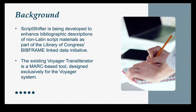Let's take a moment to understand the need for a tool like ScriptShifter. As the Library of Congress transitions to a linked data environment and implements the library collections access platform we call Folio, we face the challenge of supporting bibliographic description for non-Latin script materials. Right now, the Voyager Transliterator is a MARC-based tool that handles this task, and it's designed exclusively for the Voyager system, which limits its future use. This is where ScriptShifter comes in. ScriptShifter is being developed as part of the library's BitFrame linked data initiative to ensure we can continue enhancing bibliographic records in non-Latin scripts in an automated and system-agnostic way beyond Voyager.